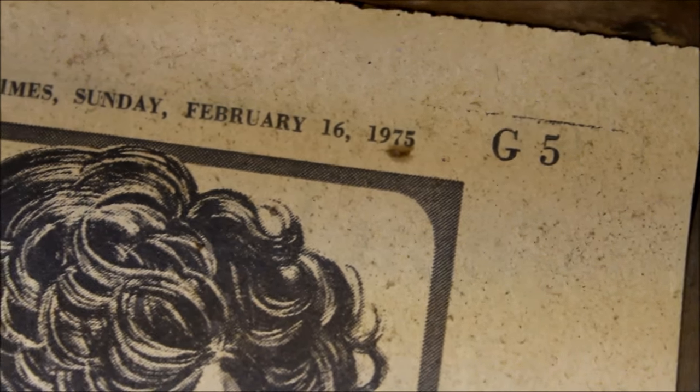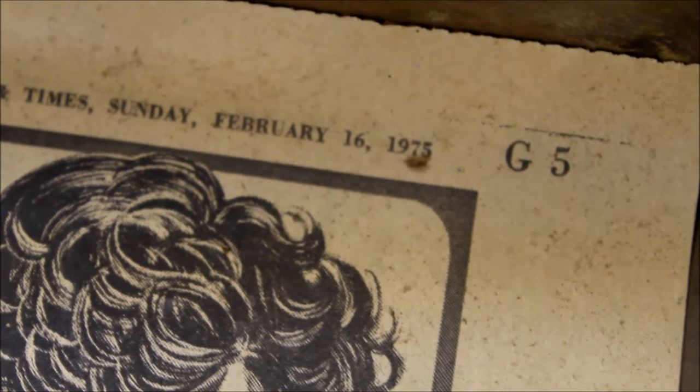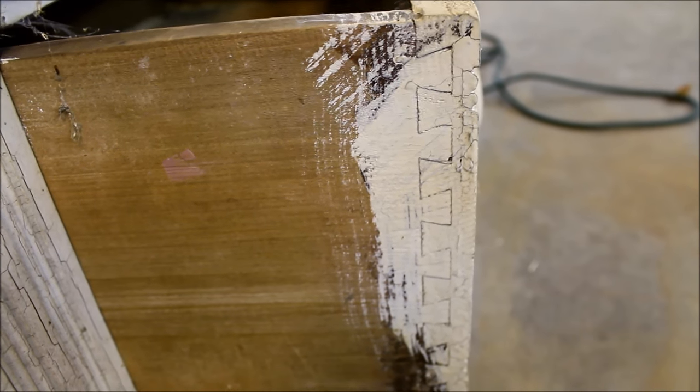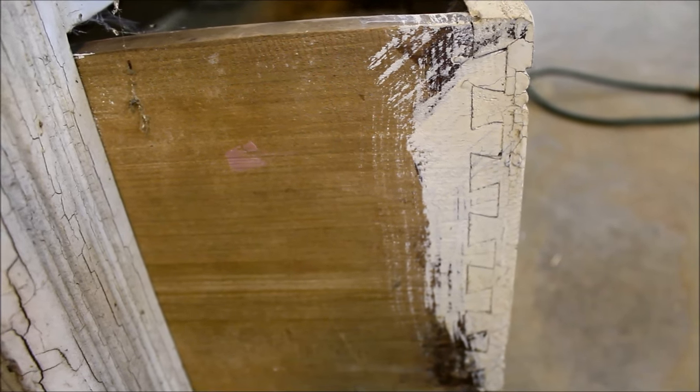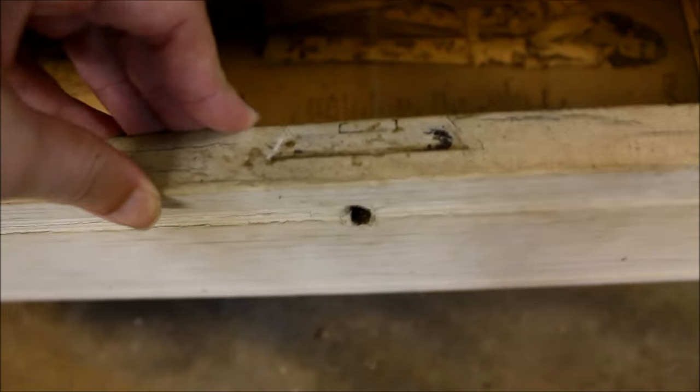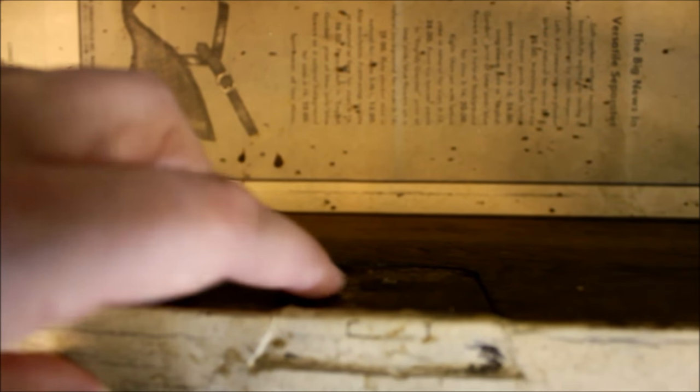Anyhow, I looked for other signs of the age of this dresser and I took a look at the drawers. The drawers appear to have a machine-made dovetail here joining the drawers. I took a look at the lock in the drawers. These look like half mortise locks.